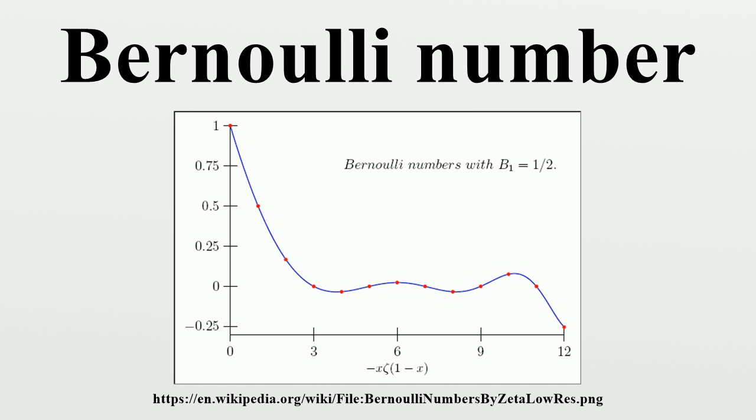If the convention B1 equals minus one-half is used, this sequence is known as the first Bernoulli numbers. With the convention B1 equals plus one-half, they are known as the second Bernoulli numbers. Except for this one difference, the first and second Bernoulli numbers agree.